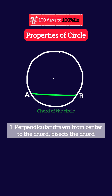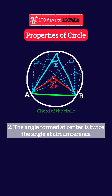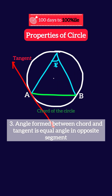Number one: the perpendicular drawn from the center to the chord bisects the chord. Number two: the angle formed at the center is twice the angle formed at the circumference, which means the angle formed between the chord and the...